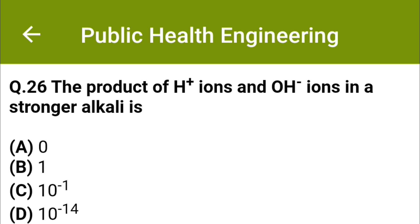The product of H⁺ ions and OH⁻ ions in a stronger alkali is: option A: 0, option B: 1, option C: 10⁻¹, option D: 10⁻¹⁴. The correct answer is option D: 10⁻¹⁴.